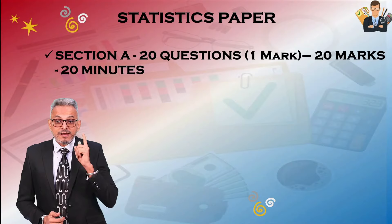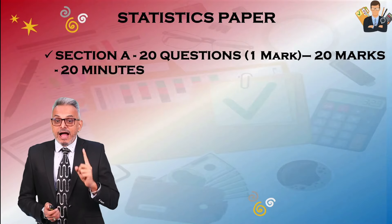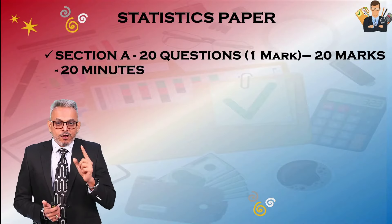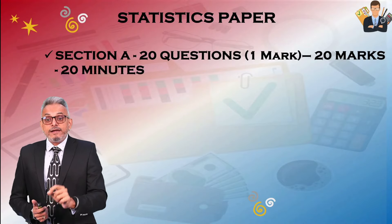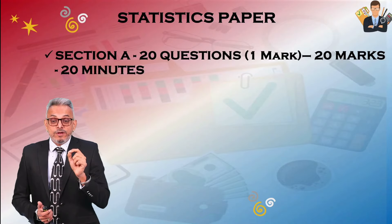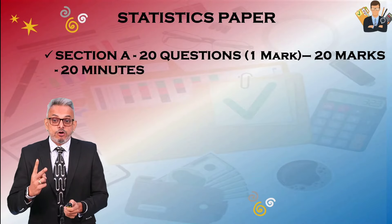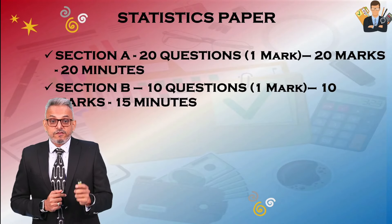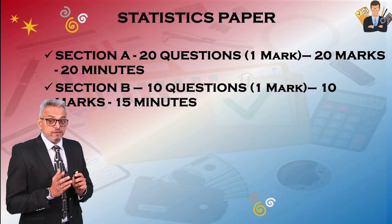Section A has 20 MCQ questions of one mark each — 20 marks total — and I am allocating 20 minutes for this, because there will be a mix of calculation-based and theory-based questions. Wherever calculation-based questions appear you will need to solve them, which takes time. Section B has 10 one-liner questions worth 10 marks, and I am allocating 15 minutes for that.